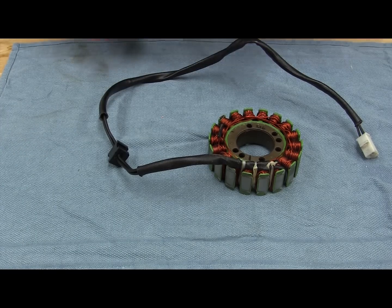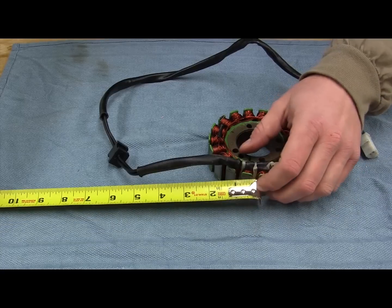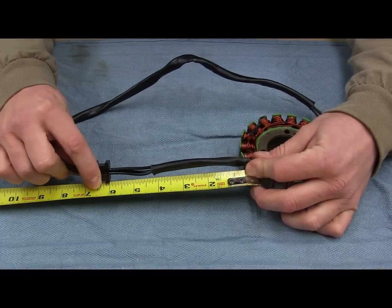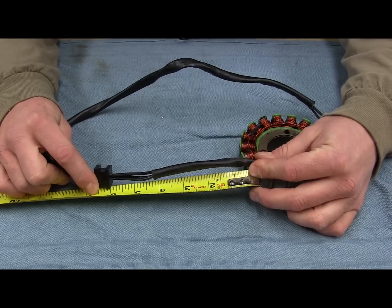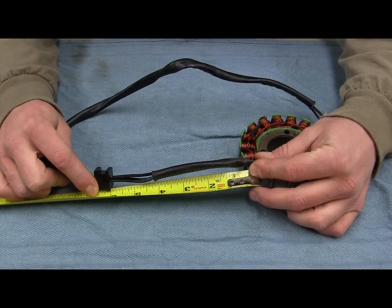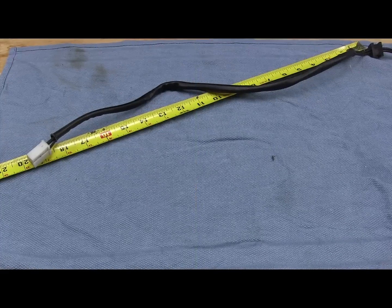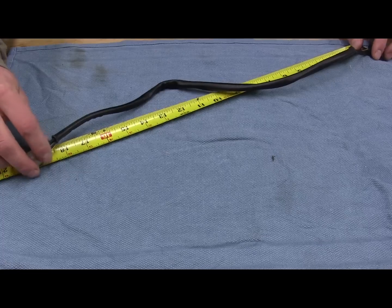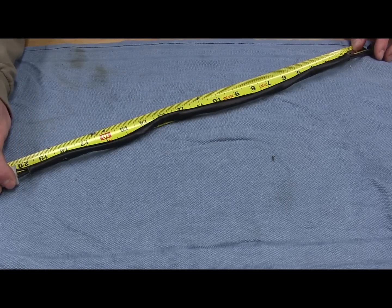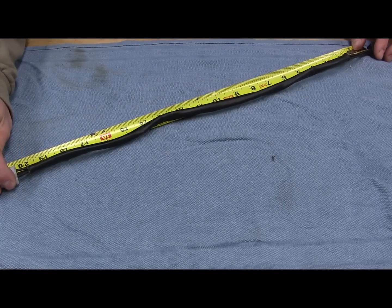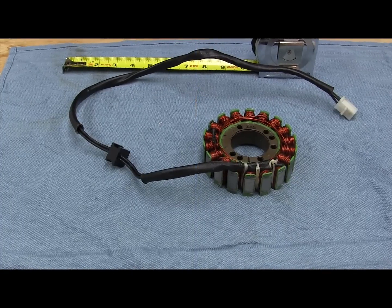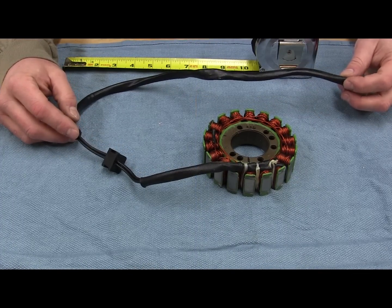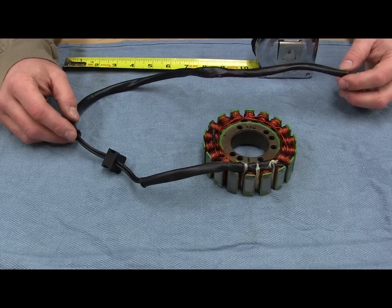So you're going to take out your tape measure. Go ahead and measure where the grommet starts. This one's six inches. You're going to want to write these down. Next you're going to want to measure from the end of the grommet to the end of the connector. This is twenty and a half inches. Also if you're installing new sheathing and it's not pre-cut, you're going to want to measure the length of that. So you can cut it to the right length when it's time to put everything back together.